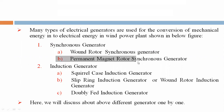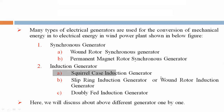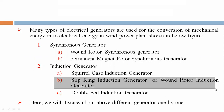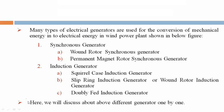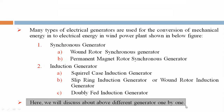B: Permanent Magnet Rotor Synchronous Generator. Similarly, the second category is Induction Generator, which has three parts: First, Squirrel Cage Induction Generator; B, Slip Ring Induction Generator or Wound Rotor Induction Generator; C, Doubly Fed Induction Generator. We will discuss each generator one by one.